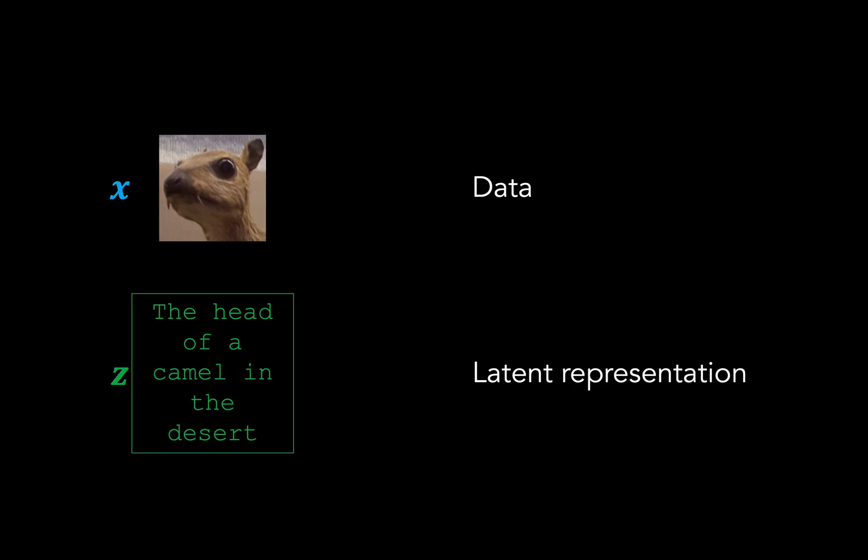In fact, when we use language to describe something like an image, we're actually distilling a continuous representation into a discrete one.